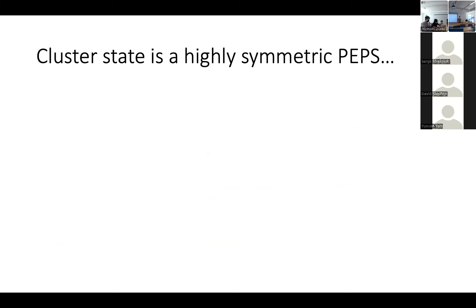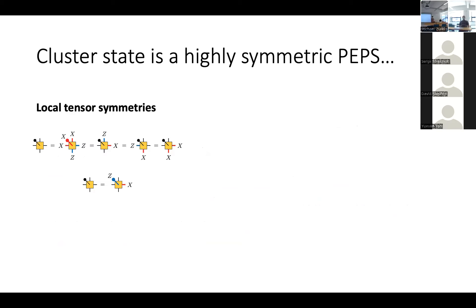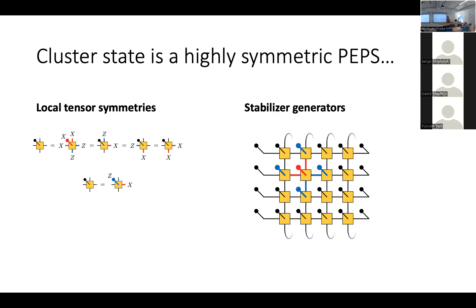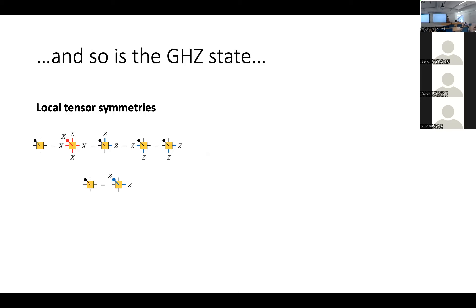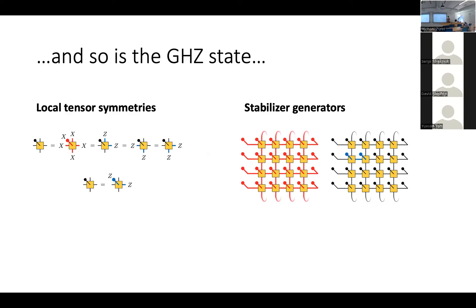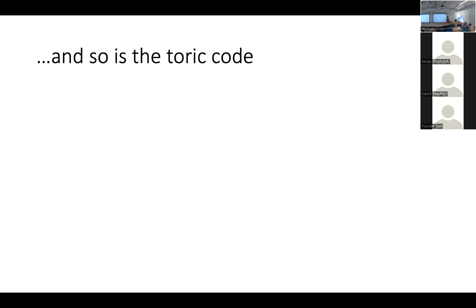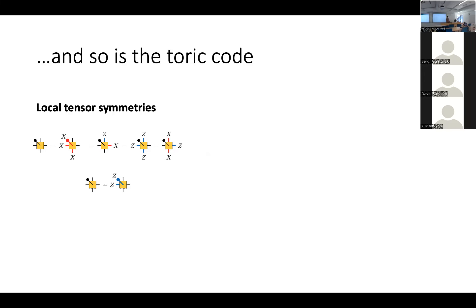The cluster state can be written as a highly symmetric PEPS with a translation-invariant local tensor satisfying a set of five symmetry constraints, all written in terms of Pauli operators — this is the stabilizer cluster state. We can do the same for the GHZ state with another set of symmetries for the local tensor, and for the toric code state: after shearing the lattice to get a square of sites and applying Hadamard gates down every other column, all vertex and plaquette generators look the same with two X's and two Z's.